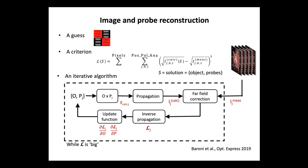Just a couple of words about the algorithm. We start like classical ptychography with a guess — here just that we have no object, meaning a diagonal matrix with first term 1 and a map of 0, 0, and 1. We have a criterion to minimize: the difference between the square root of the calculated intensity and the measured one. There is an iterative algorithm where we do the propagation, calculate the far field, introduce information from the experimental intensity, invert the propagation, and update with an appropriate gradient.